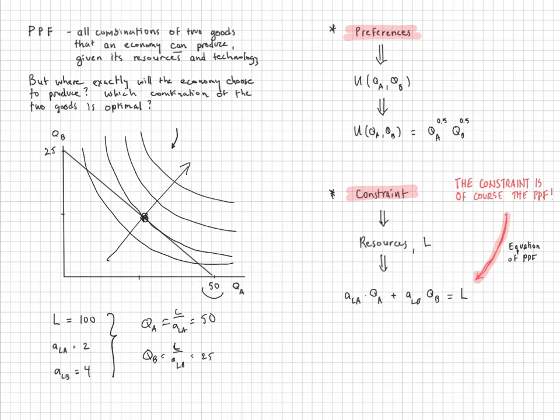The slope of the indifference curve is going to be the marginal rate of substitution. The slope of the PPF is the opportunity cost or the marginal rate of transformation. That's going to give us the condition that would determine where on the PPF we want to be. But let's do an example.